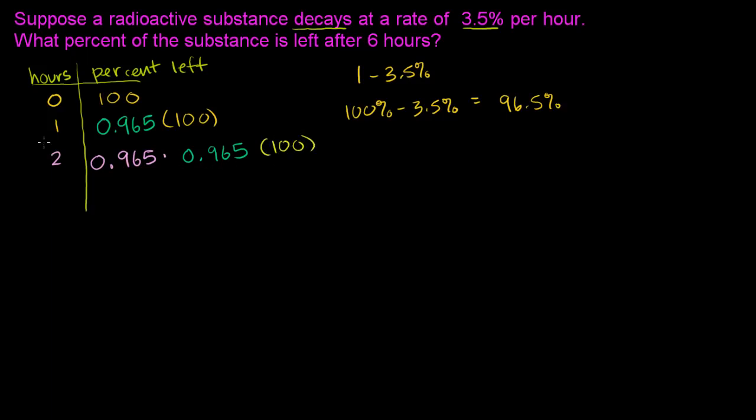I think you see where this is going in general. So in the first hour, we have 0.965 to the first power times 100. In the zeroth hour, we have 0.965 to the zeroth power. We don't see it, but there's a 1 there times 100. In the second hour, 0.965 to the second power times 100.